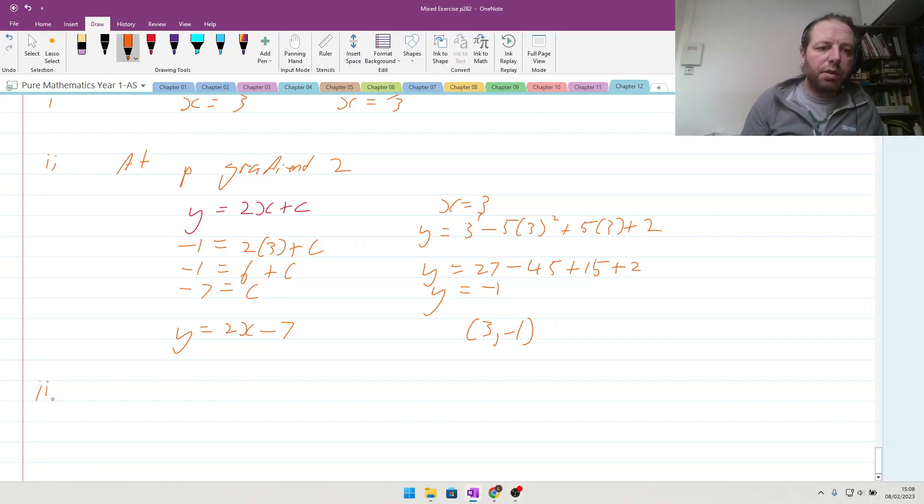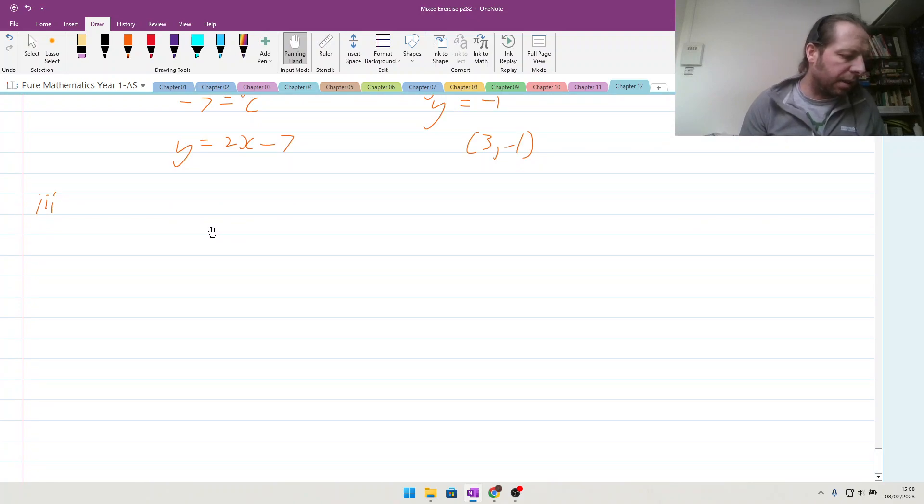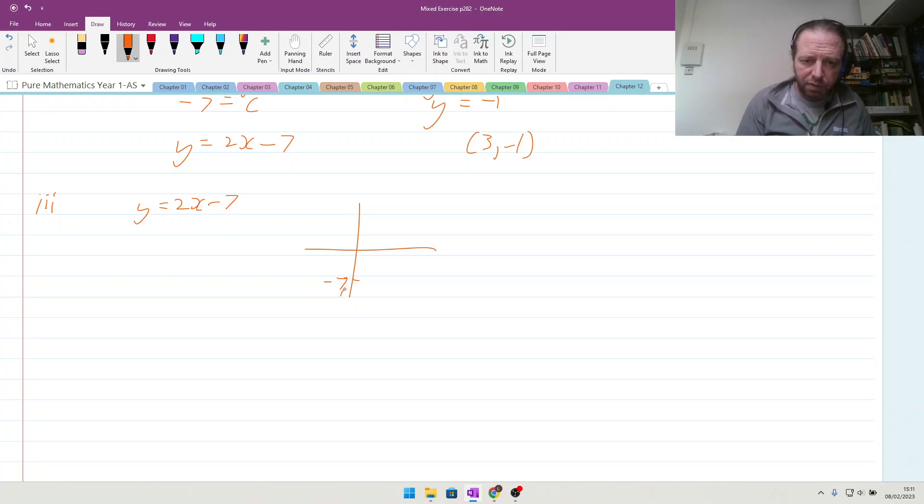Now finally on to part 3 of this question. If the tangent intersects the coordinate axis at the point r and s, find the length of rs giving your answer as a surd. So the tangent has the equation y equals 2x minus 7. So thinking about what this roughly looks like, it goes through here at minus 7 and it's got a positive gradient of 2. It comes up here like this, and we are looking for the length between the axes here. So this is when y equals 0, so 0 equals 2x minus 7, giving us x equals 7, 3.5.